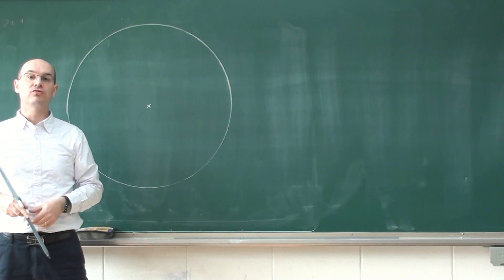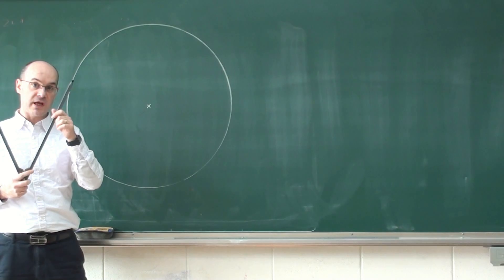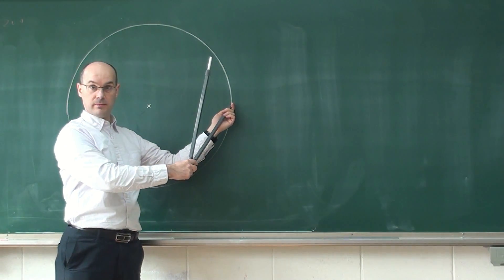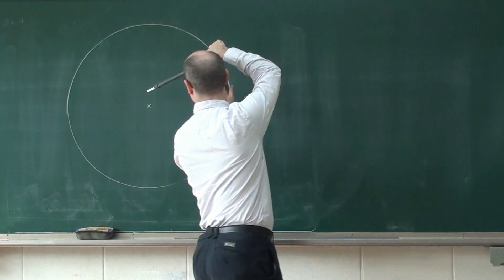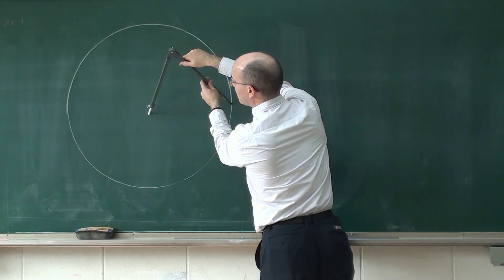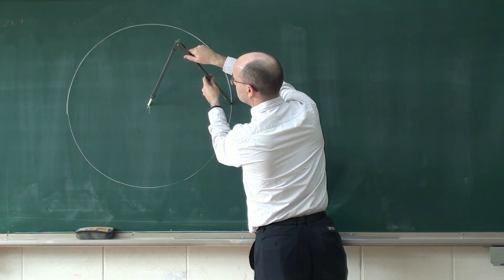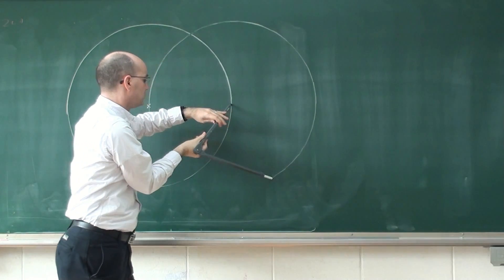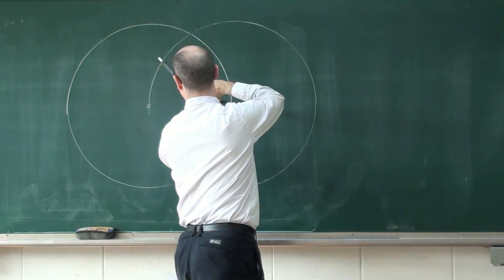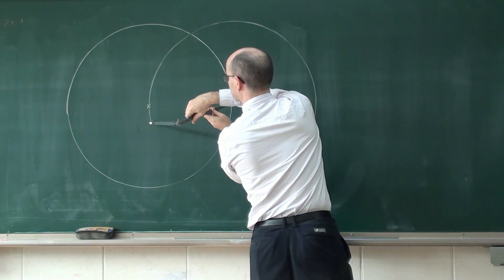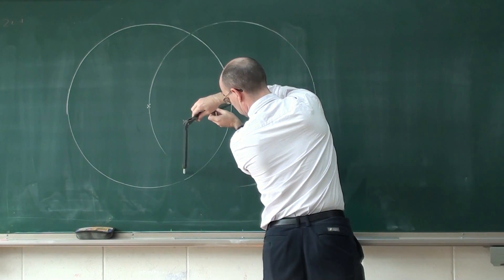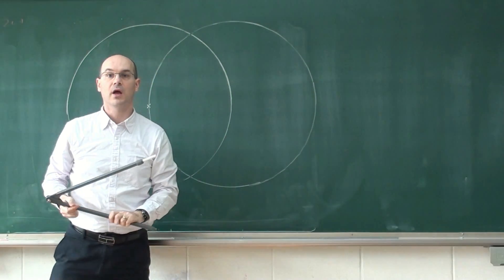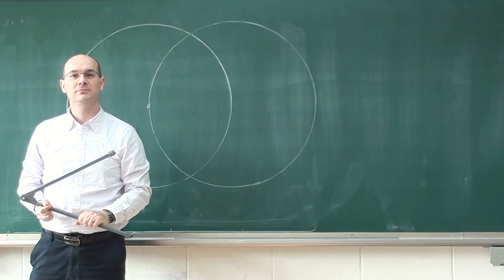From this you are going to draw another circle with the same radius and the center of the other circle is on the first circle. So you will actually be like that. Are you still with me so far? Good!